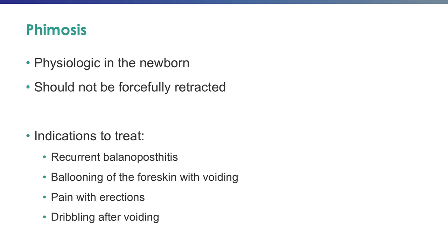Regarding phimosis — phimosis is physiologic in the newborn and one should not forcefully retract the foreskin in an infant with phimosis. Indications for treatment of phimosis include recurrent inflammation or irritation or balanopostitis of the foreskin and glans, ballooning of the foreskin with voiding, pain with erections, and dribbling after voiding.